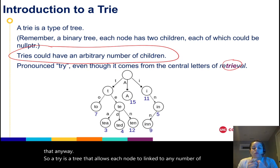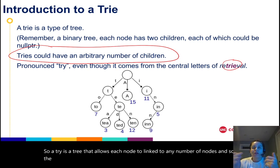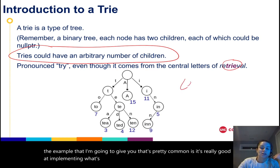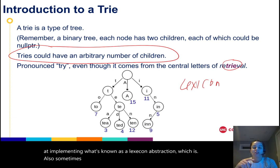So a trie is a tree that allows each node to link to any number of nodes. The example that I'm going to give you that's pretty common is it's really good at implementing what's known as a lexicon abstraction, which is also sometimes called a dictionary abstraction.